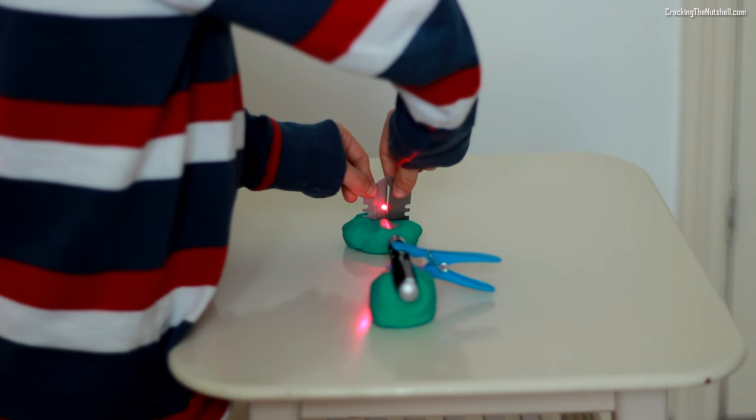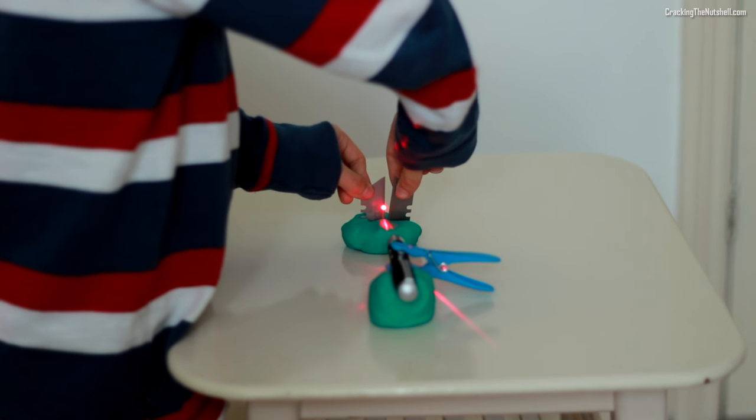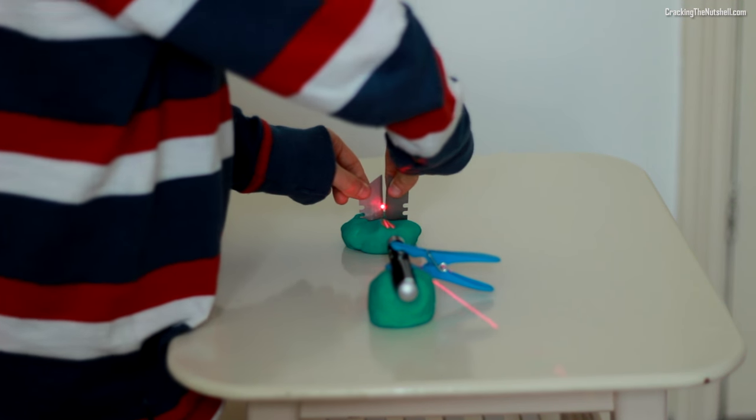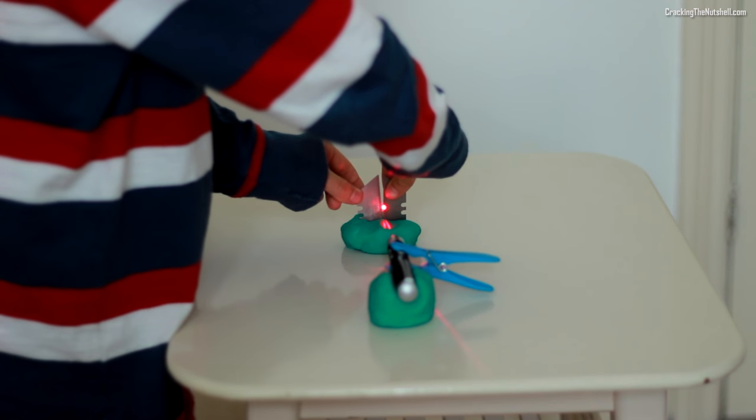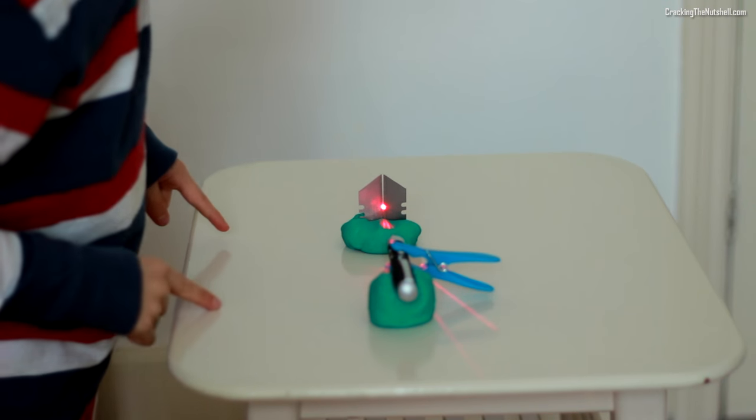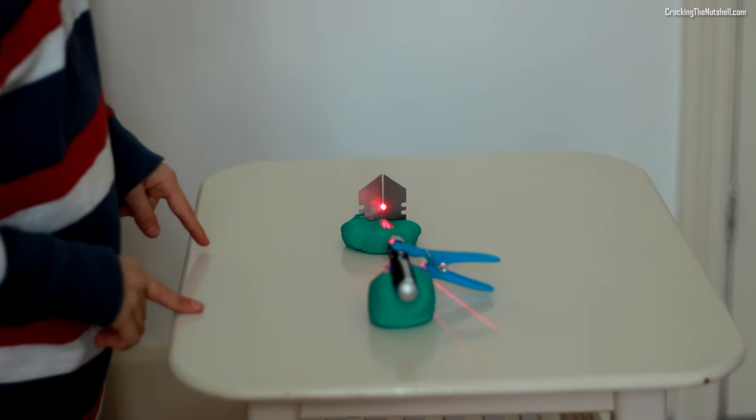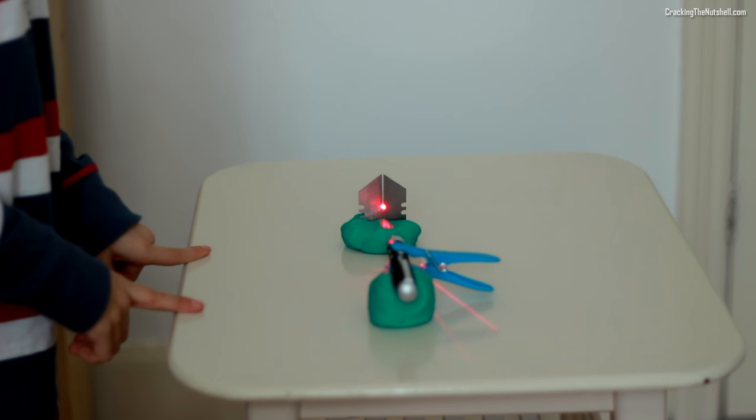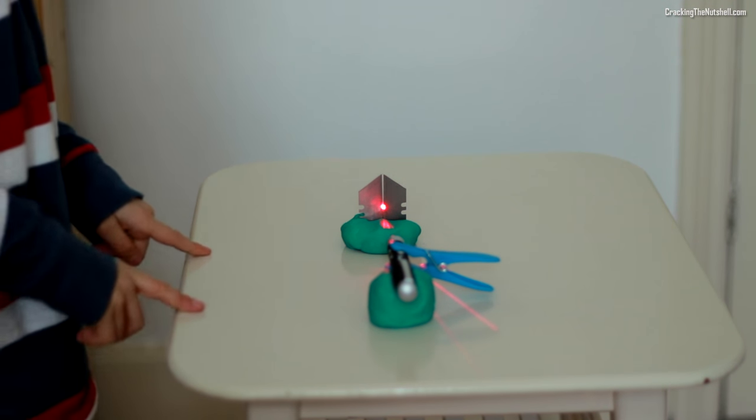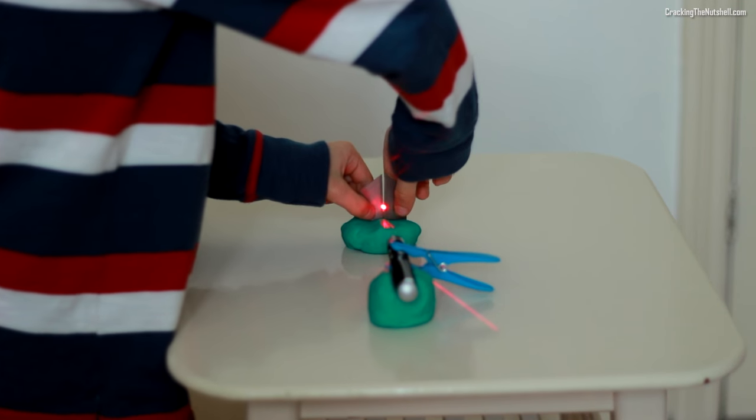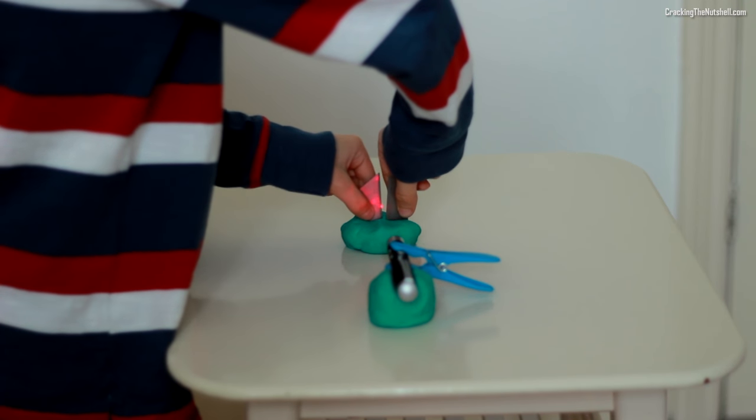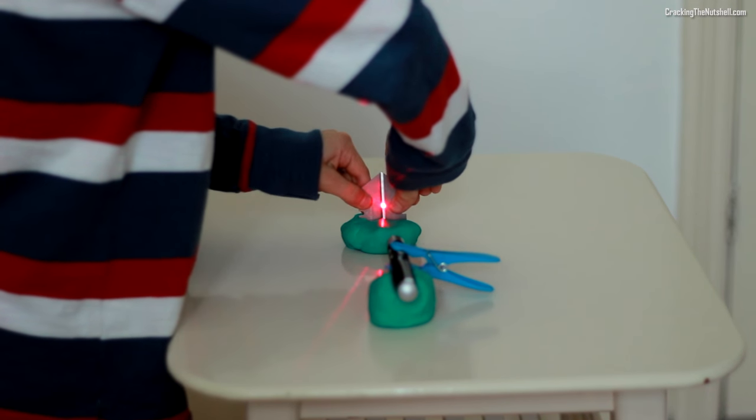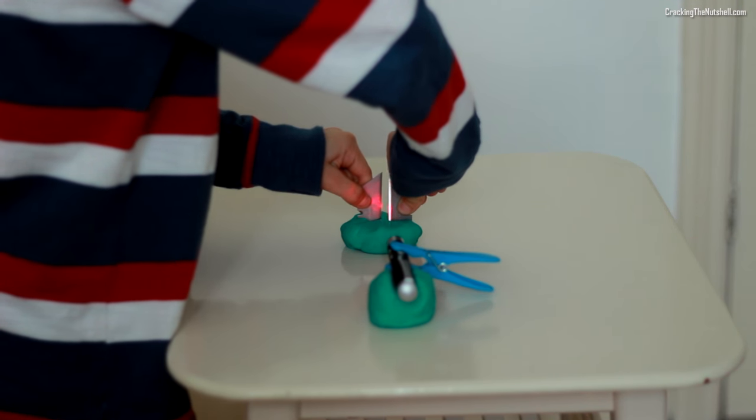Now, once we have pointed the light beam right in the middle between the two blades, we can then proceed to narrow the slit's width by slowly bringing the two blades towards each other. Be extra careful because those blades are very sharp and I'm guessing you don't want to end up injuring yourself. So, unlike what my son is doing in this clip, try your best to keep the blades as parallel to each other as you possibly can, while very slowly bringing them closer together.